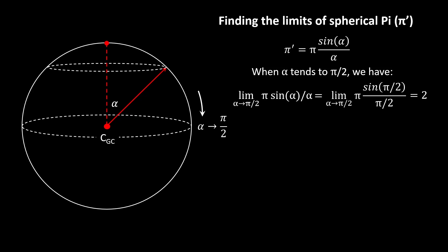So if we draw the biggest circle we can on the surface of a sphere—that's a great circle—spherical pi for that circle has a value of 2.0.